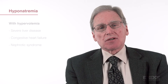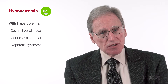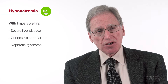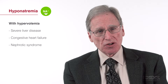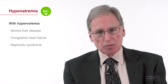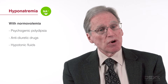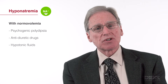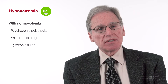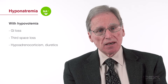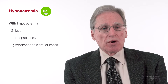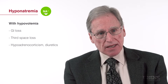With hyponatremia, or decreased serum sodium concentration, this can be a little more challenging because hyponatremia can occur with hypervolemia in three particular situations, all characterized by activation of the renin-angiotensin-aldosterone system: severe liver disease, congestive heart failure, and nephrotic syndrome caused by glomerular disease. You can also see hyponatremia with normal circulating volume, such as in an animal with psychogenic polydipsia or if an animal has received drugs that interfere with water excretion. Finally, you can see hyponatremia in patients with hypovolemia — most commonly with gastrointestinal losses, third space loss, hypoadrenocorticism, or diuretic administration.